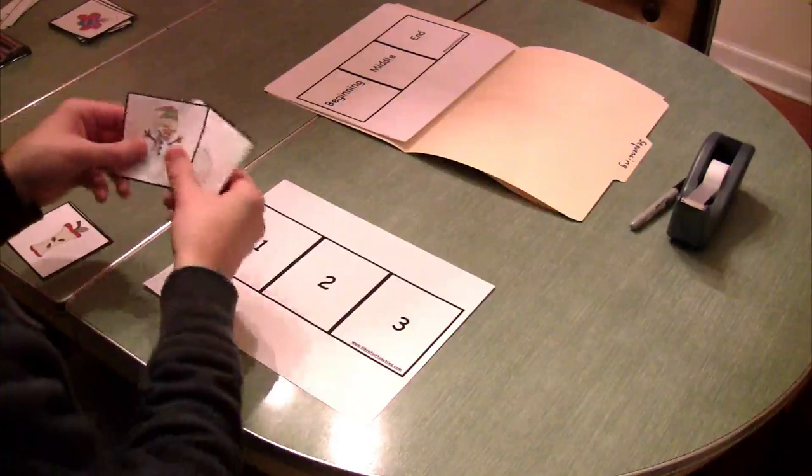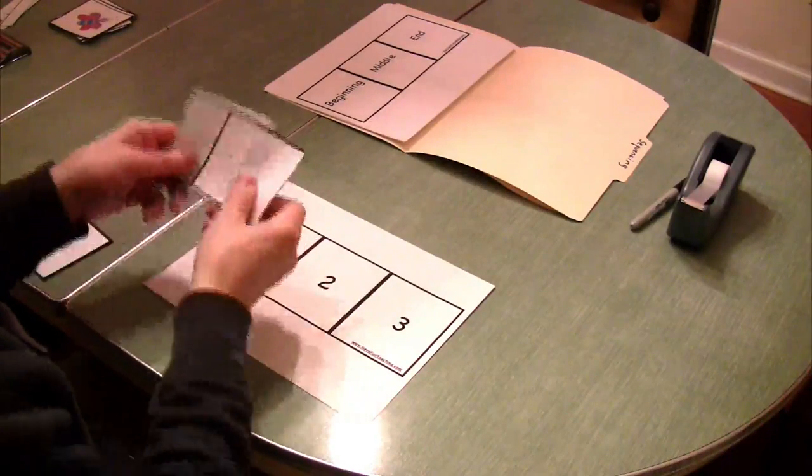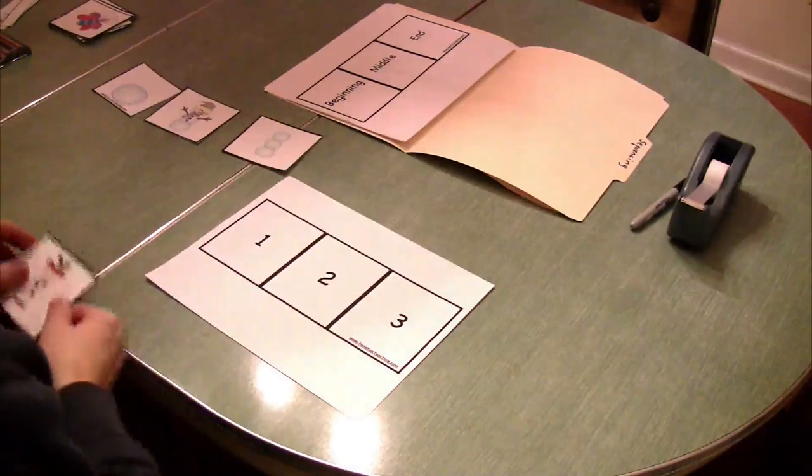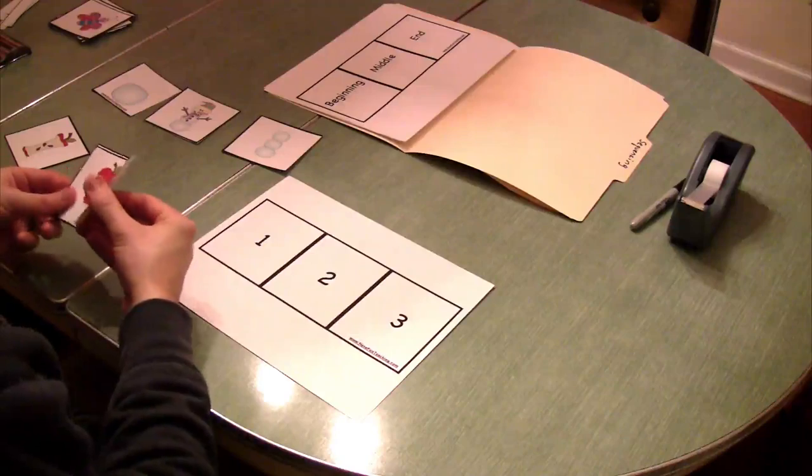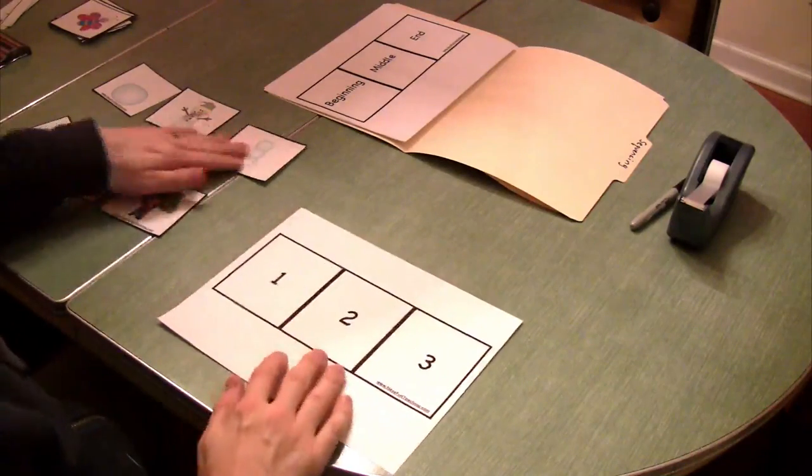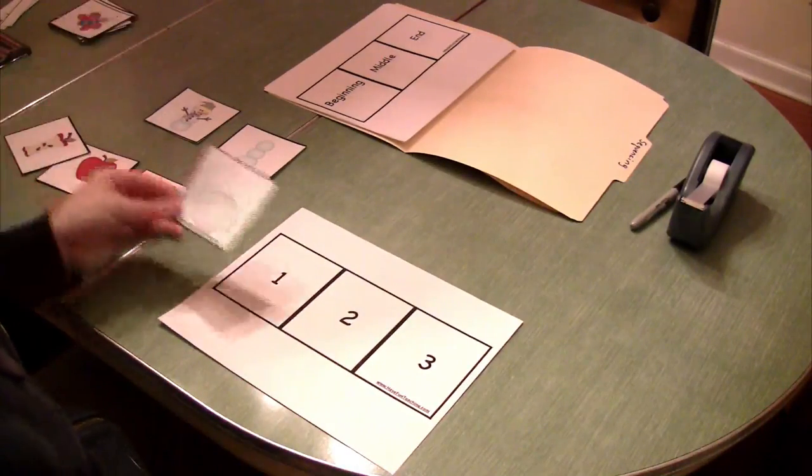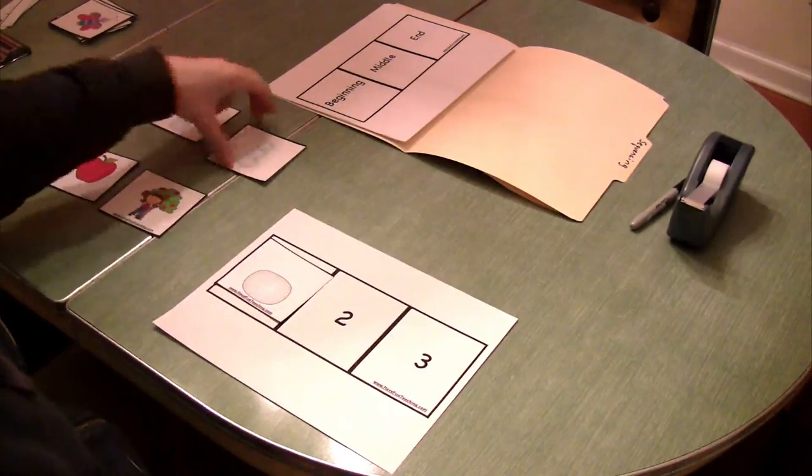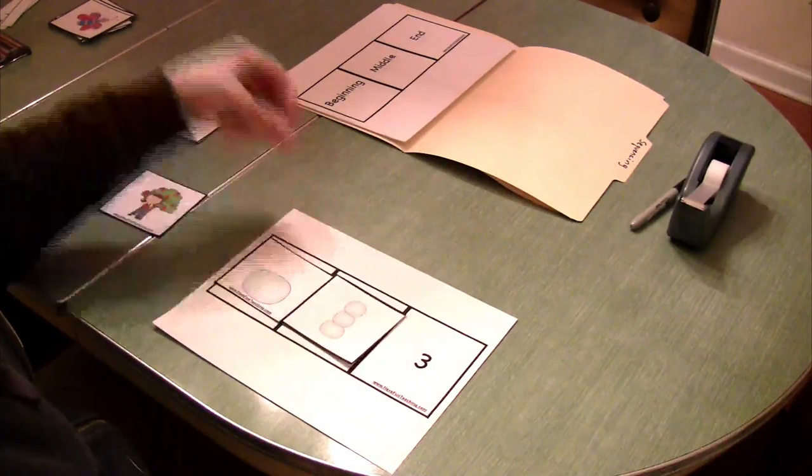Now we're going to start out with just having three different sequences of one image and three sequences of another image. And students are now asked to put the pictures in sequence, starting with one, then two, then three.